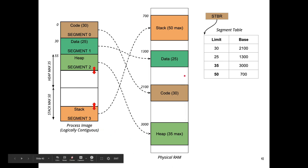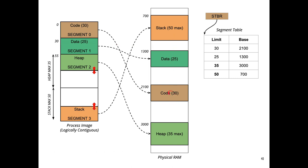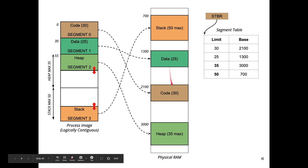In physical RAM the order is totally different: stack appears first at the lower address, then data, code, and heap. Adding more registers to the MMU may be expensive, so to keep hardware cost low we can replace the base and limit register pairs with one table. This table is stored in memory and is called the segment table. It stores the limit and base pair, and the number of rows corresponds to the number of segments — in this example, four segments means four rows.